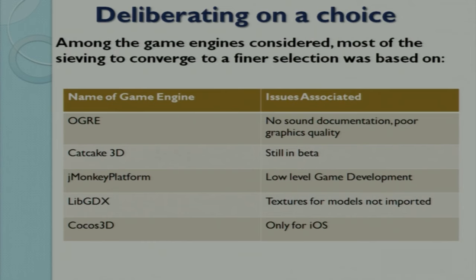It was not logical to spend the entire internship evaluating every one of these, so we divided into teams with the simple task of including touch, zoom, pinch, and swipe interactivities in a single vendor model — if we could do that, we could extrapolate to the full eye model. From the sieving process: Ogre (Object Oriented Graphics Rendering Engine) was eliminated due to no sound documentation and poor graphics quality. Our major USP was that visuals are more appealing to students, so poor graphics was disqualifying. CatCake3D is still in beta, so we could not continue with it. jMonkey Platform is for low-level game development with poor graphics quality. libgdx does not include textures in imported blend models, so it was eliminated immediately.